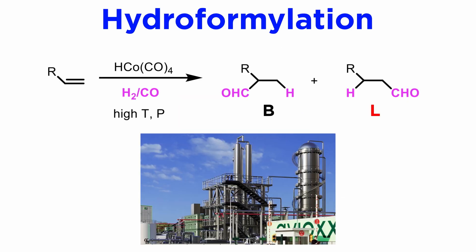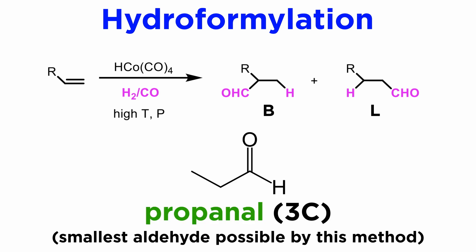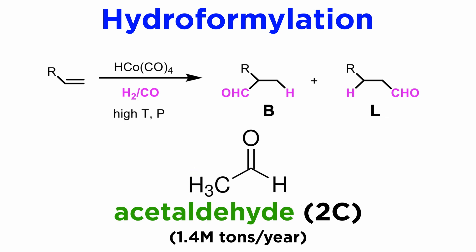In the previous tutorial, we discussed the hydroformylation of olefins to produce linear aldehydes, which are important intermediates in the chemical industry. The smallest aldehyde that can be prepared by hydroformylation is propanal, a three-carbon synthon. Acetaldehyde, which contains only two carbon atoms, is also an important industrial intermediate, with a yearly market of 1.4 million tons.